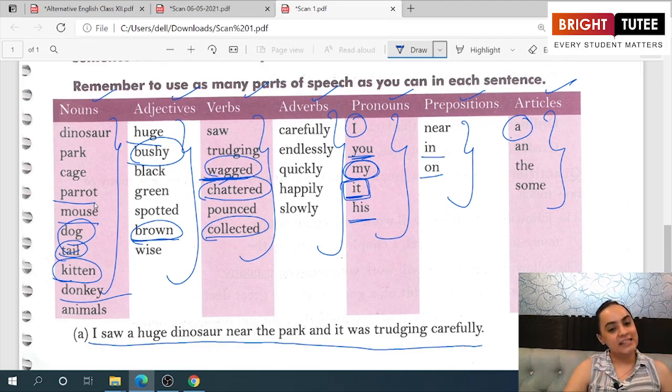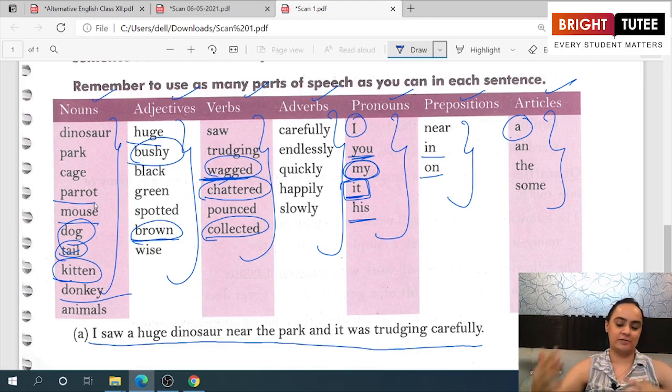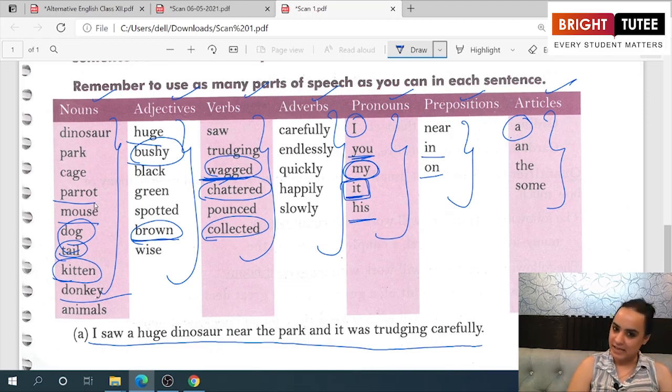So you see, this way, dear students, you can pick any random combination of a pronoun, verb, adjective, noun and frame a sentence using it.